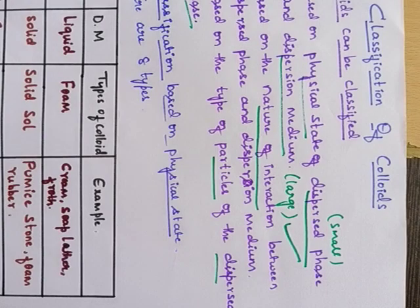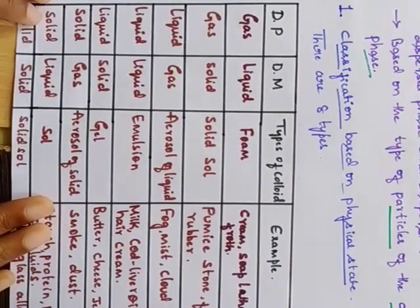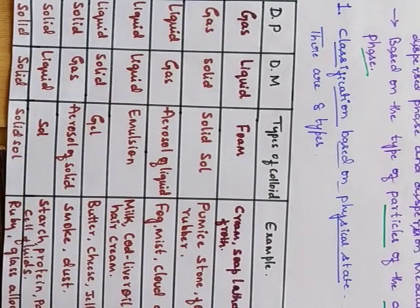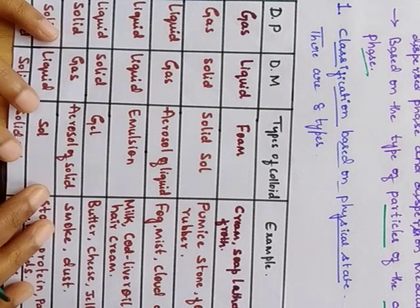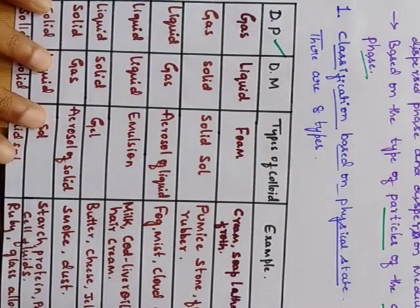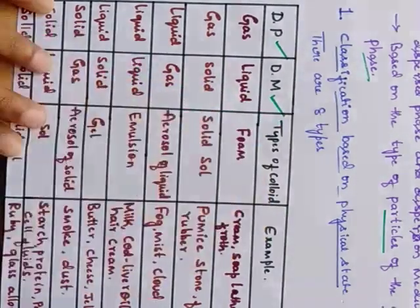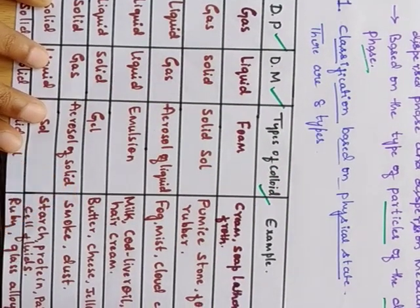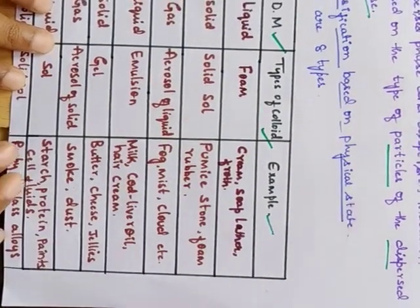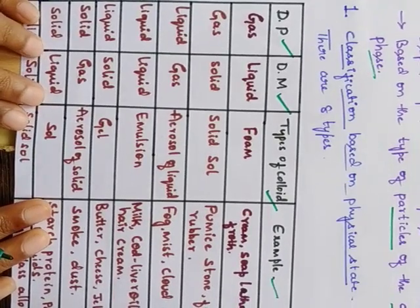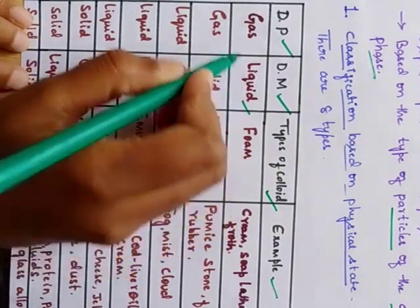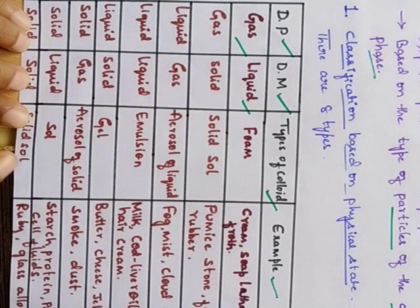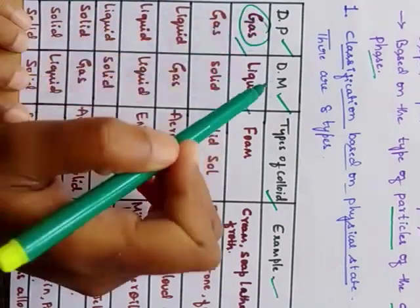For today's class, we focus on the first classification based on physical state. There is a table showing the dispersed phase (solute, smaller quantity) and dispersion medium (solvent, larger quantity), and what type of colloid is formed when different physical states are combined, along with respective examples. For instance, if the dispersed phase is a gas and the dispersion medium is a liquid, these are in different physical states.